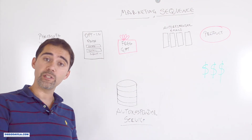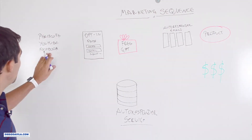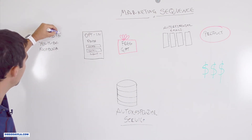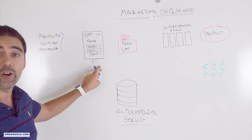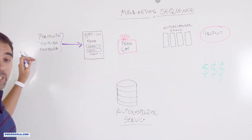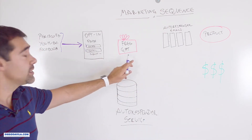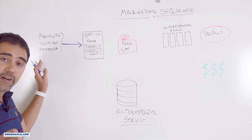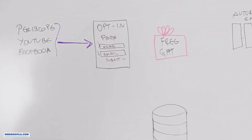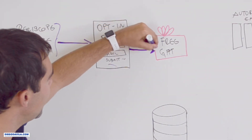This is the marketing sequence we will be using during this video series. We have the prospect — your future clients on Periscope, YouTube, and Facebook. These people go to an opt-in page. An opt-in page is a page where we ask these people for their name and their email in exchange for a free gift. I'll show you later how we can forward these people to the opt-in page. They enter their name and their email and click submit.